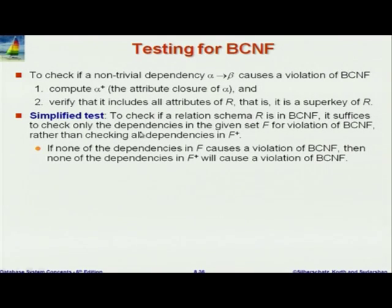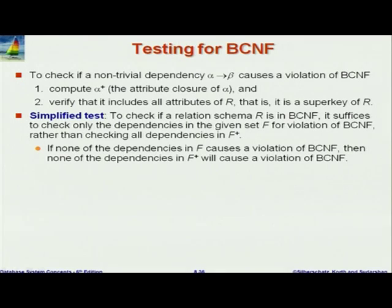So now, if I'm given a particular relation R — schema R — it's not decomposed at this point, and I'm given a set of functional dependencies on that one schema. If I want to check if this satisfies BCNF or not, I can do the following: take each dependency in F and apply the previous test. That is, I take each dependency alpha goes to beta, compute alpha+, and that will tell me whether alpha goes to beta shows that this violates BCNF. So if I just do this for all the given dependencies, I can check if R violates BCNF or not. That seems like a very easy, very cheap test for BCNF.